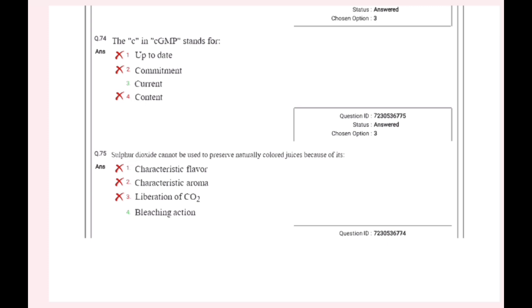One question is: how can we answer questions in the next minute? First, sulfur dioxide cannot be used to preserve naturally colored food.